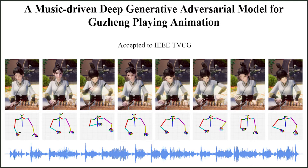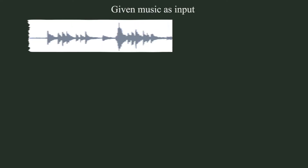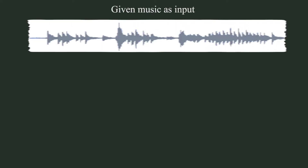In this paper, we propose a method to synthesize upper body joint movements from the audio of a Chinese traditional musical instrument called Guqin, given Guqin music.